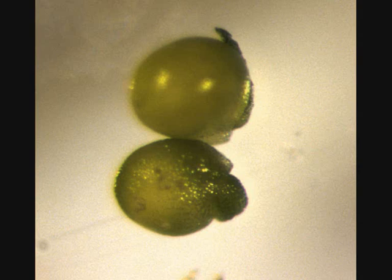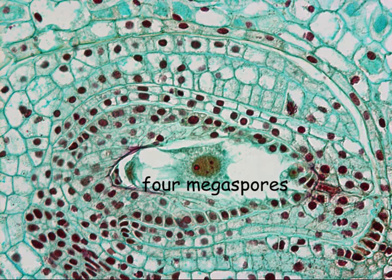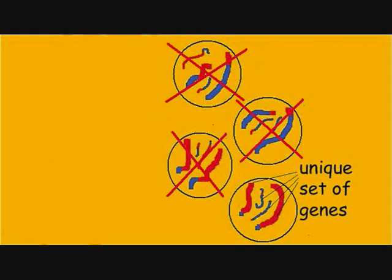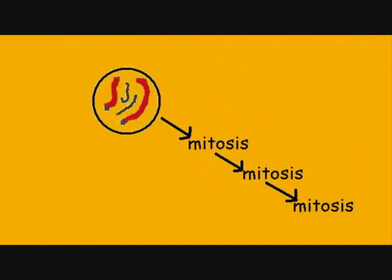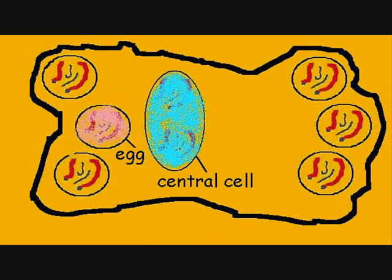Within each ovule, a specialized diploid cell called a megasporocyte will undergo meiosis to form four haploid megaspores. Three megaspores will die and one will undergo three mitotic divisions to form seven cells. The central cell contains two nuclei because the cytoplasm does not divide during the last mitotic division. This multicellular seven-cell tissue is the female gametophyte, also known as the embryo sac. A single egg will form inside each embryo sac or female gametophyte.